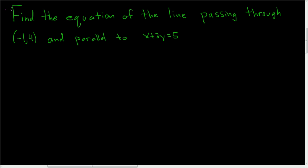Find the equation of the line passing through (-1,4) and parallel to the line x plus 3y equals 5. Let's go ahead and work this out.